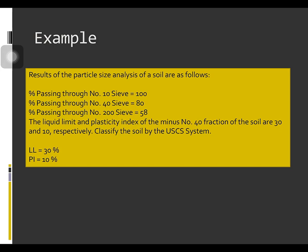The liquid limit is equal to 30 and the plasticity index is equal to 10. As you can see, this is also the example from our previous discussion using the AASHTO system. Now, let us classify this soil using the USCS system.